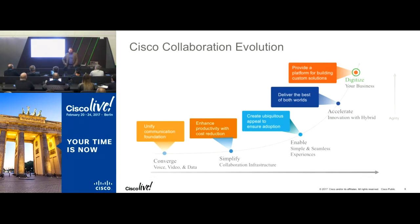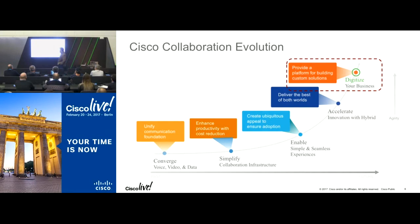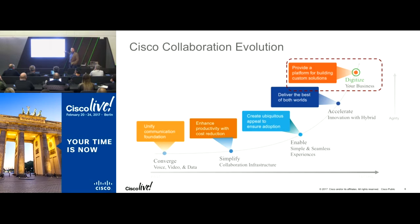Everybody defines agility a little bit differently. You'll also see people say it's to digitize your business - that's the new buzzword in IT this year, kind of like BYOD. If I look at the history of Cisco Collab, I like to think of it on this curve of evolution. We started by converging voice, video, and data networks with Voice over IP. Your HR department probably didn't notice the improvement in efficiency or lower costs - it didn't change their agility or the way they do business. We then started to deliver collaboration tools that improved productivity. Now we're going into this accelerated curve, starting with accelerating with hybrid.